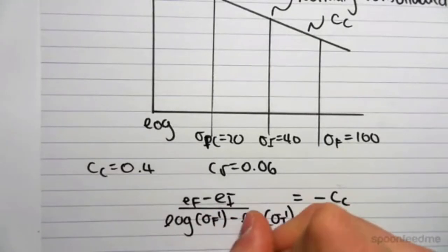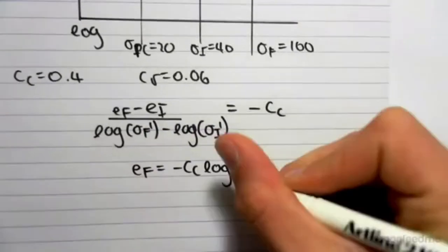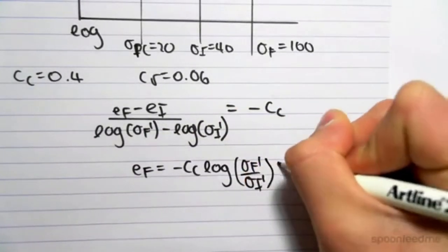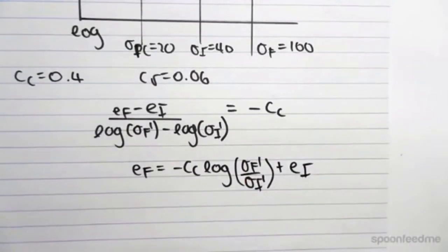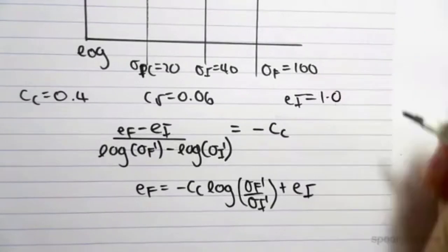So we can rearrange this to get ef equals minus cc log sigma f dash over sigma i dash plus the initial void ratio. Let's just say that the initial void ratio was 1.0.